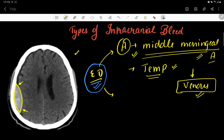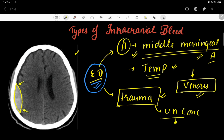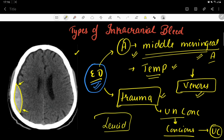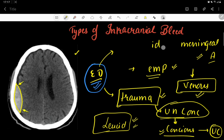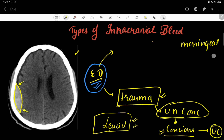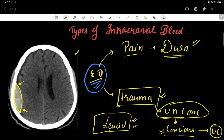In most cases of epidural hematoma there is a history of trauma. After the trauma, the patient becomes unconscious, then regains consciousness, and with time the conscious level starts decreasing and the patient again becomes unconscious. The period of consciousness between these two unconscious episodes is called the lucid interval. Other clinical features include severe headache pain, which is due to stripping of the dura mater — the dura is a pain-sensitive structure.